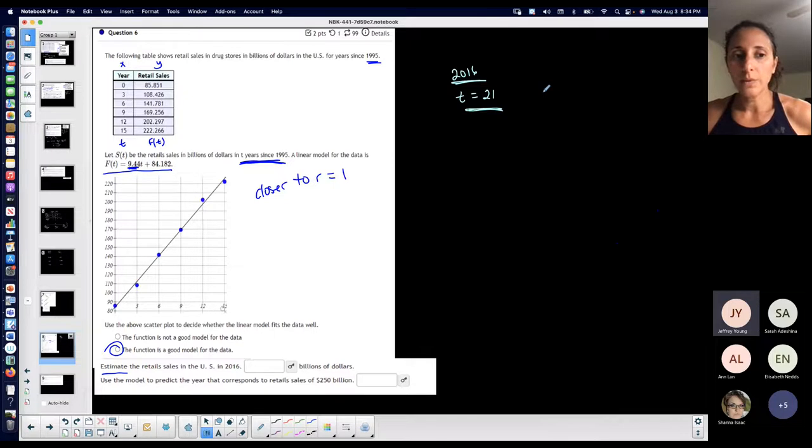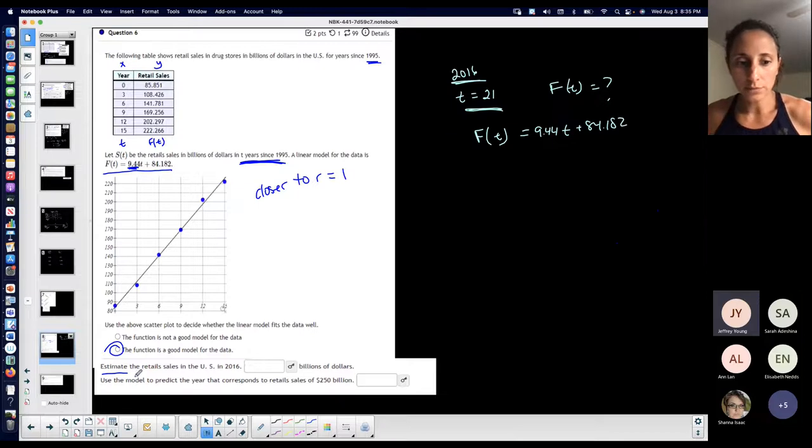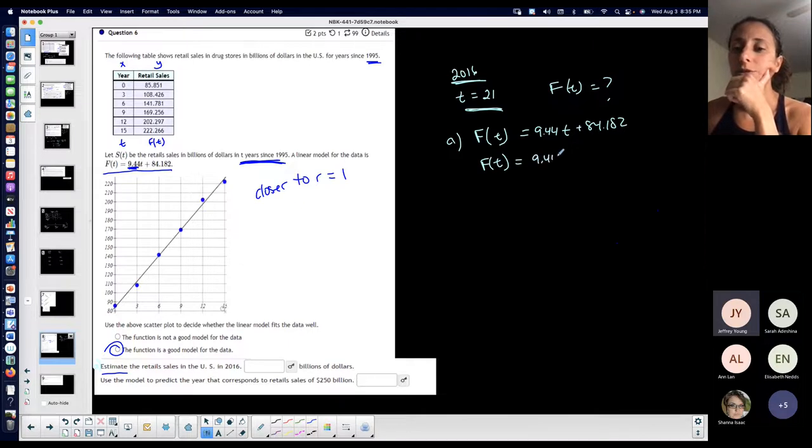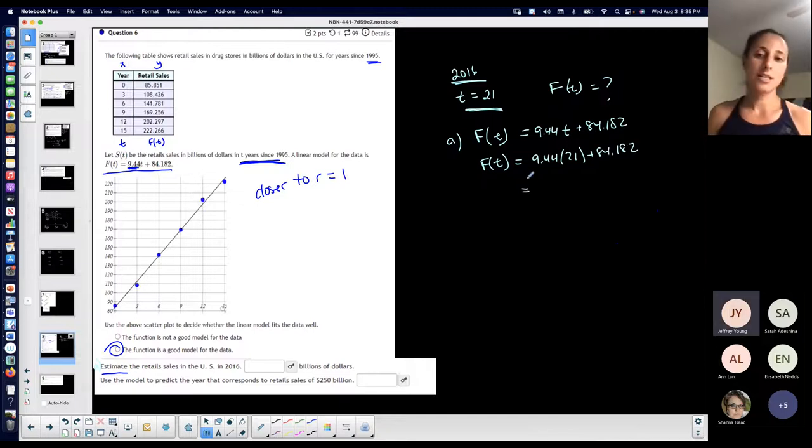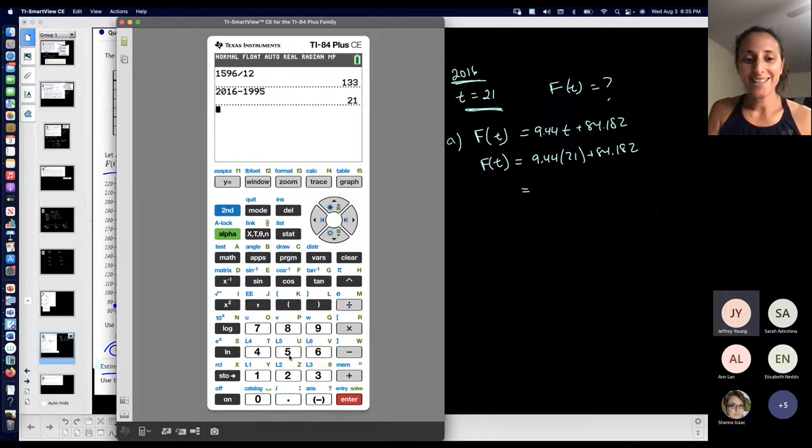When T is 21, what would be my outcome? What would be F of T? So you have it given to you. F of T is 9.44 T plus 84.182. OK. I'll call this A. So how do I find F of T? If I know T, plug it in. Right? 9.44 times 21 plus 80. Plug and chug, as they say. Plug and chug. 9.44 times 21 and then plus 84.18.